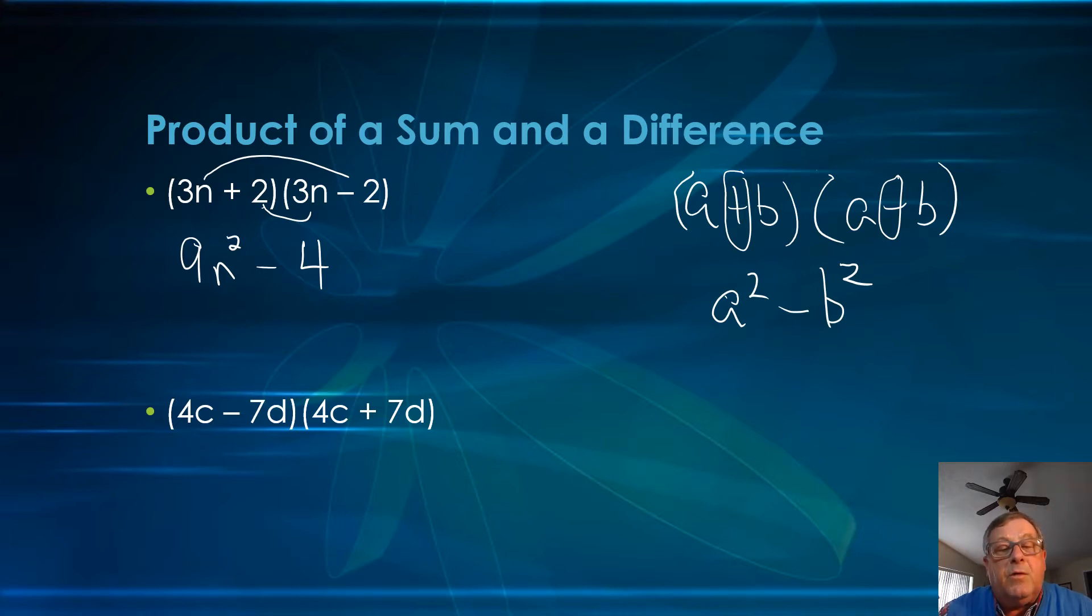Let's drop down here and do this next one. We've got 4c minus 7d times 4c plus 7d. We can quickly go about this using this pattern.